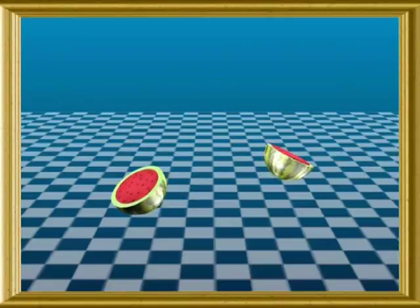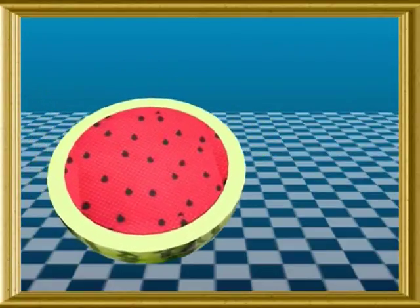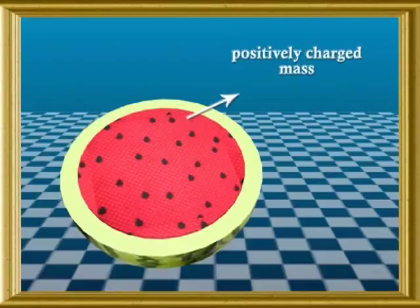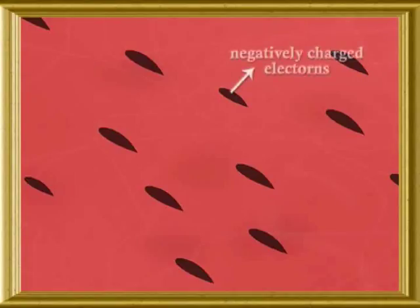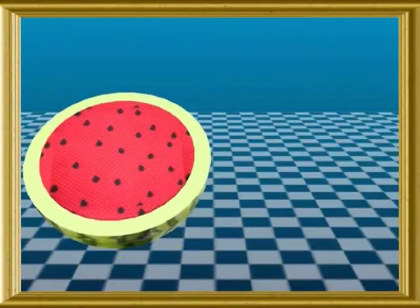Look at this visual. You see a half-cut piece of watermelon. The red pulpy mass can be compared with the positively charged mass of an atom. The black seeds embedded in the pulp can be compared with the electrons in an atom. Thus, Thompson's model of atom is also referred to as the watermelon model, and sometimes as the plum pudding model.